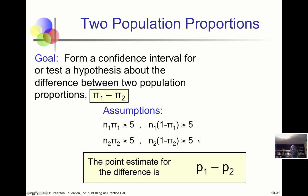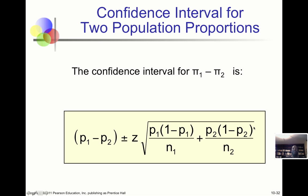The point estimate is what we observe in the samples. In sample 1, we'll observe proportion 1. In sample 2, we'll observe sample proportion 2. So the difference between those two would be our point estimate of pi1 minus pi2.